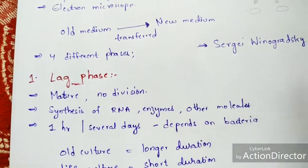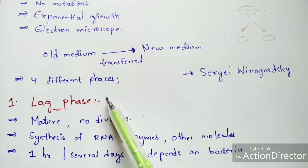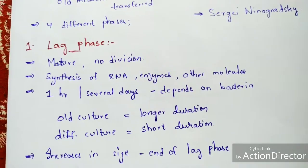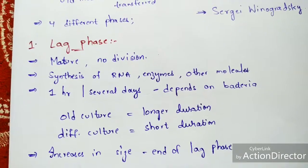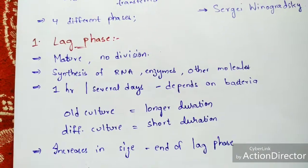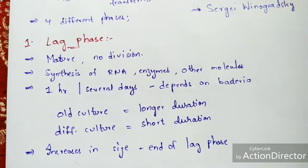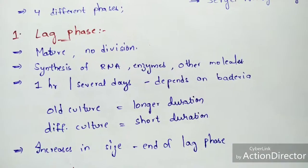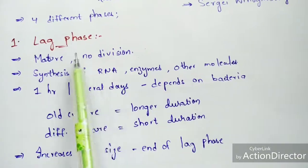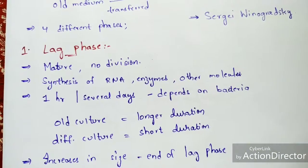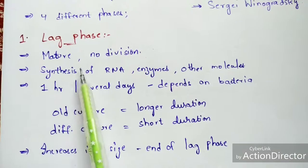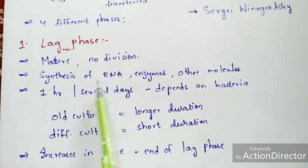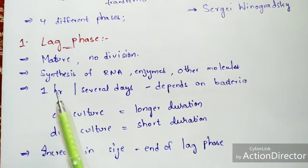In the lag phase, a freshly formed individual increases in size and becomes mature — maturity means attaining the ability to reproduce. When it attains this capacity, it becomes a mother individual able to produce daughter individuals. There is no division in this phase; the cell only grows in size. Synthesis of RNA, enzymes, and other molecules takes place in the lag phase. The duration is typically one hour but may take several days depending on the bacteria.